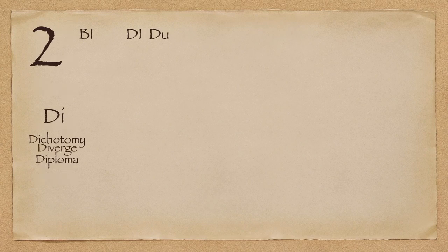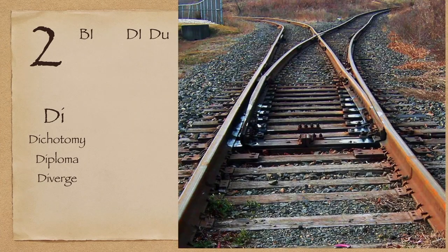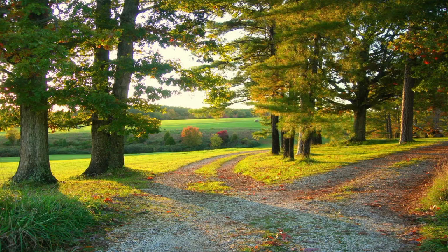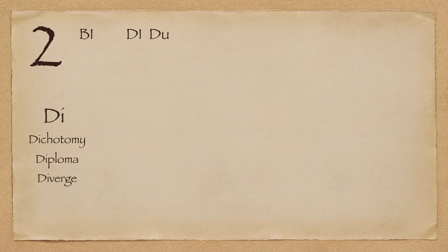Next up is diverge. Di is two and -verge is to turn. So when something turns into two — when a path or line splits into two and starts going in different directions — that situation is known as divergence, or the verb is to diverge. For example, the flight path diverged from the original flight plan, or you are diverging from the discussion, going away from it.